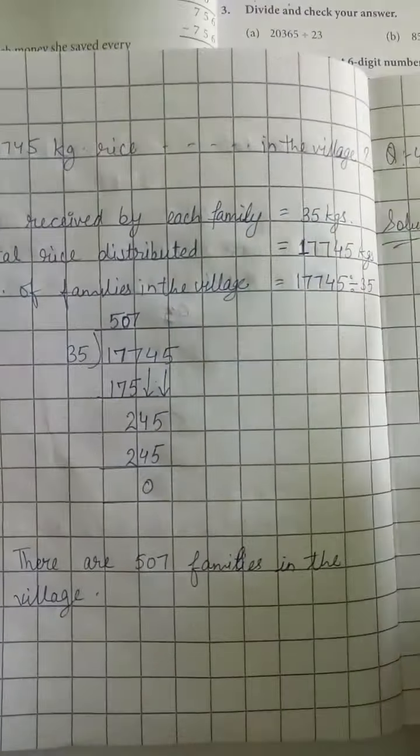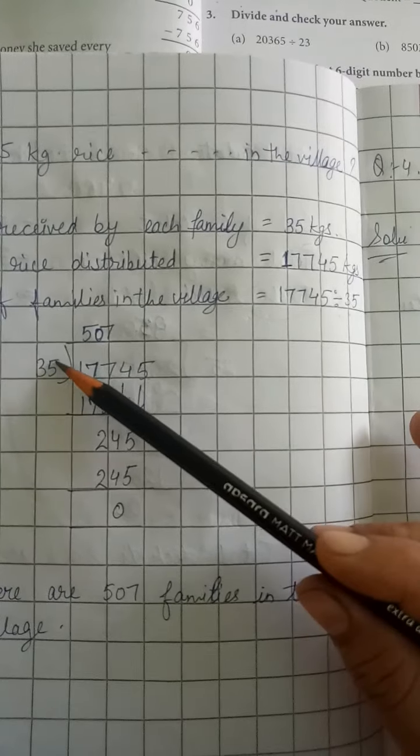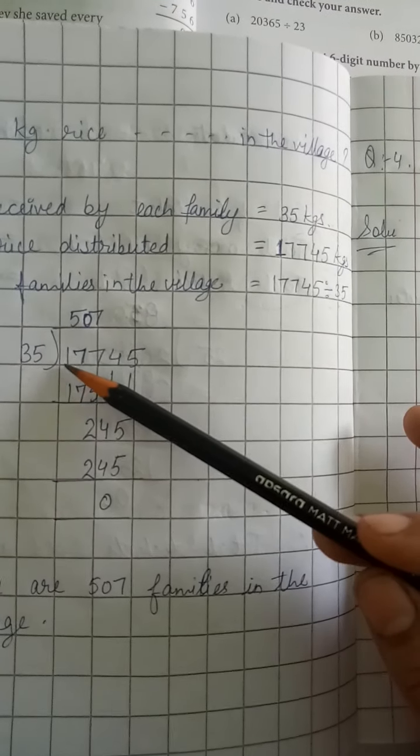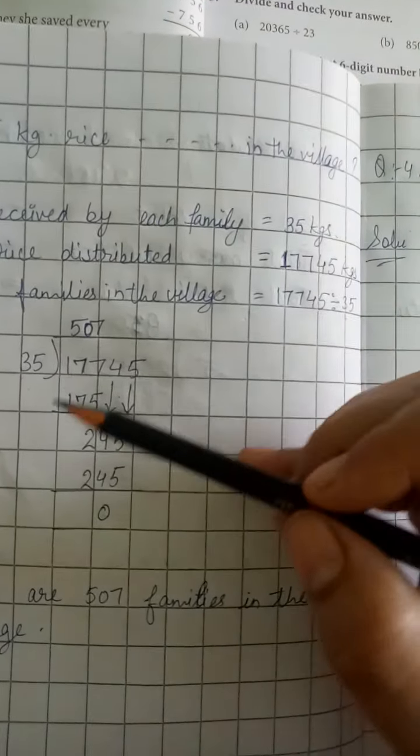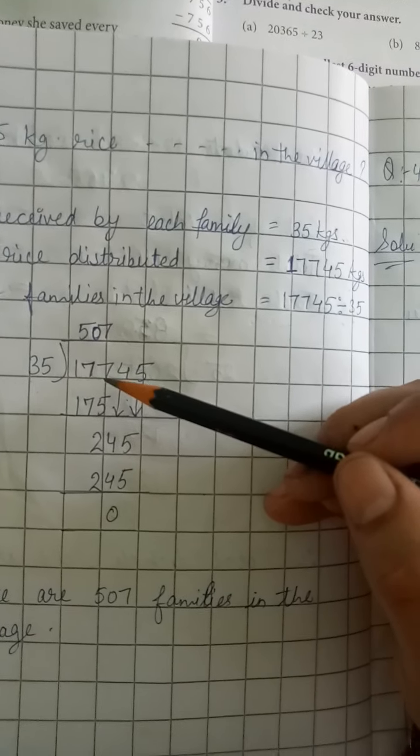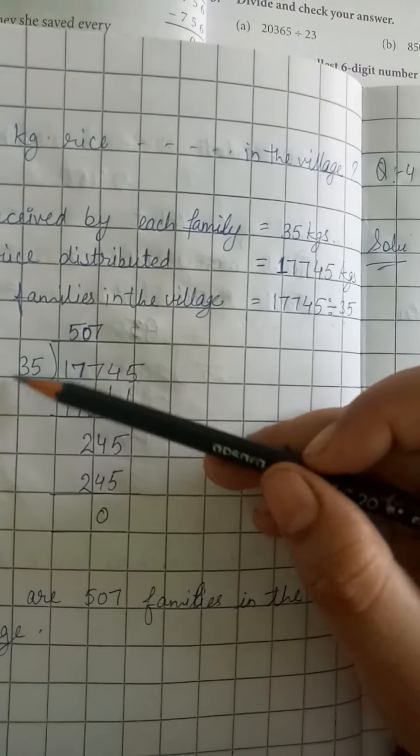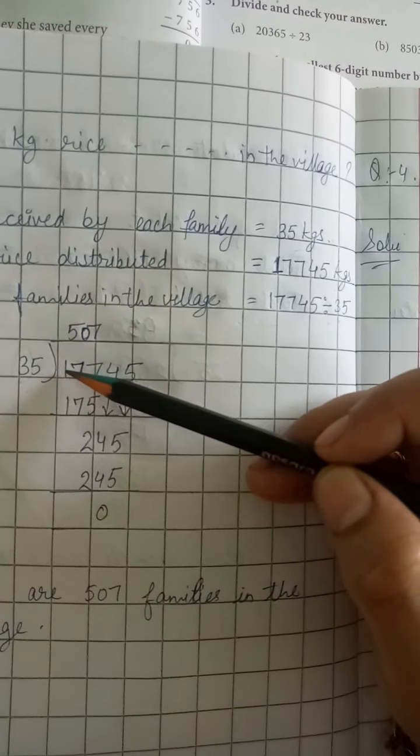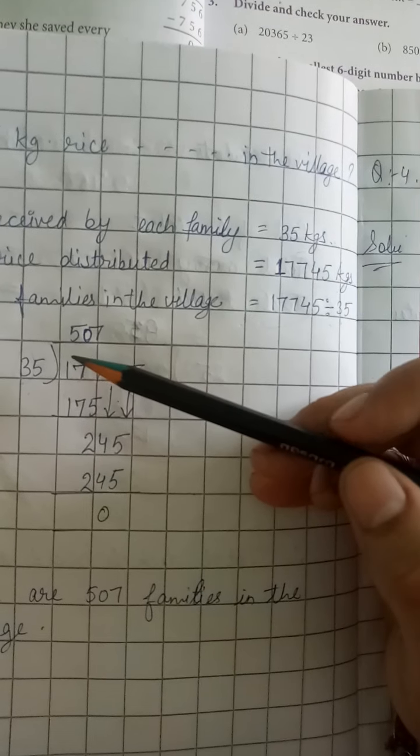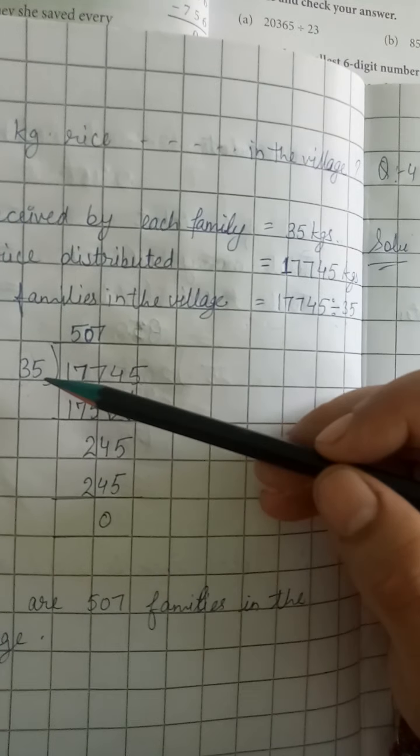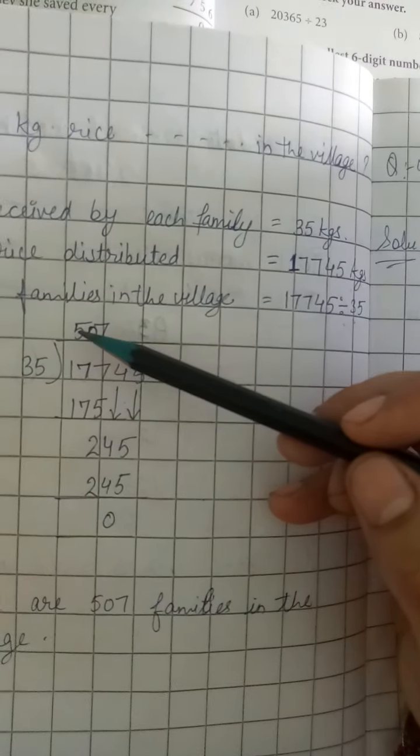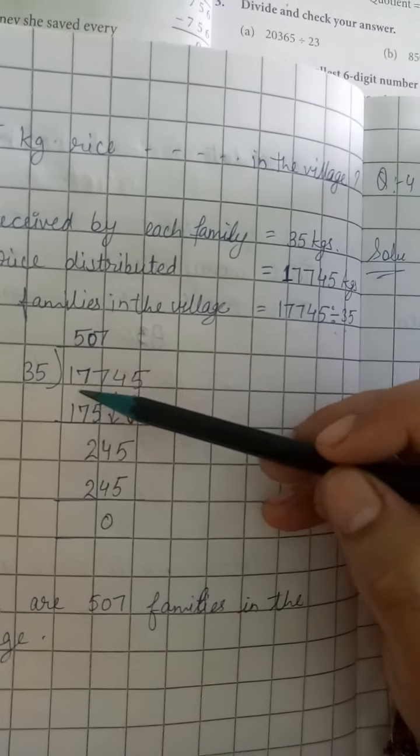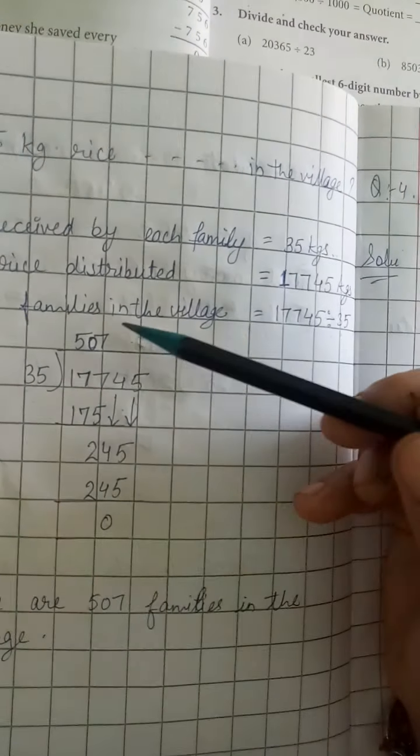17,745 divided by 35. 35 is a two digit number. First two digits - 17 is less than 35, so we will take three digits, 177. Now we divide 177 by 35, but we don't know the table of 35. What will we do? We will count 35 up till 17 or a number less than 17. 3 × 5 is 15, 3 × 6 is 18, which is greater than 17, so we will count one less.